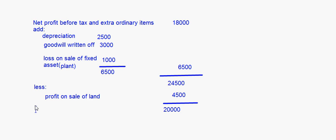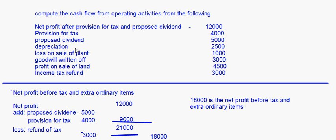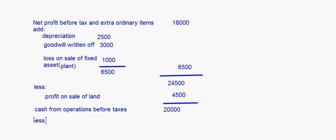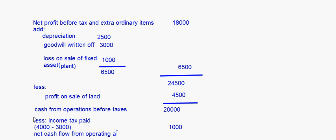This 20,000 is cash from operations before taxes. Provision for tax is 4,000 and income tax refund is 3,000, so actual income tax paid is 4,000 minus 3,000 equals 1,000. Deducting this 1,000 from 20,000 gives us 19,000 rupees as the net cash flow from operating activities.